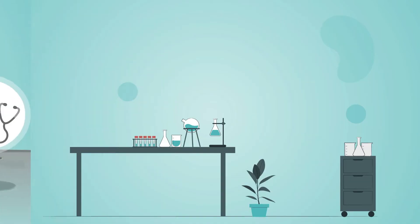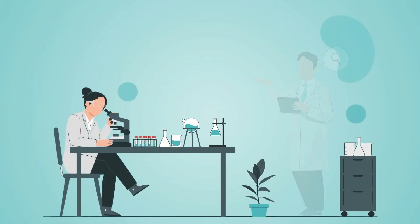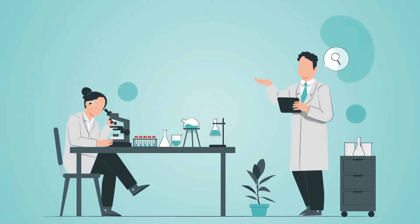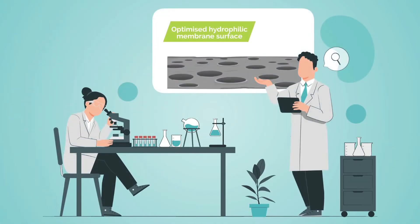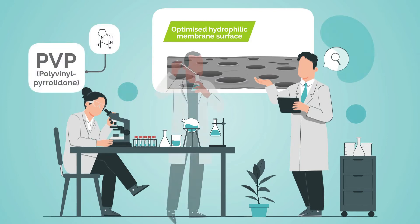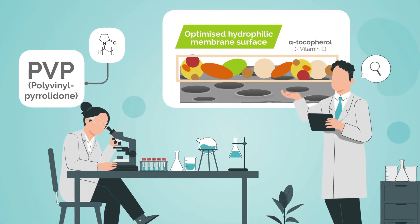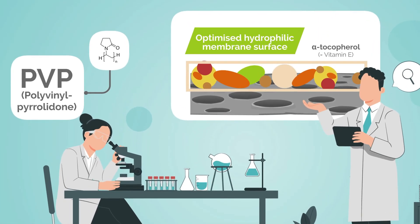Melchior and colleagues developed a polysulfone membrane where PVP is stabilized with the antioxidant alpha-tocopherol to yield an optimized hydrophilic membrane surface. Secondary membrane formation is therefore minimized, improving the overall hemocompatibility of the membrane.